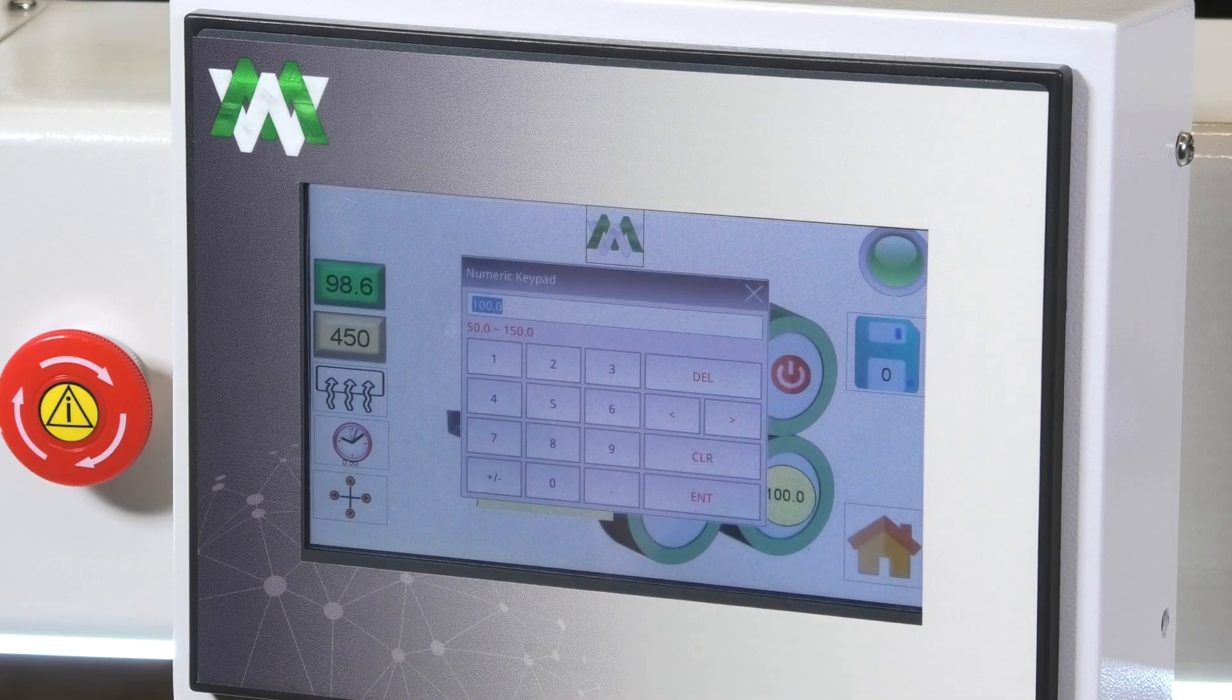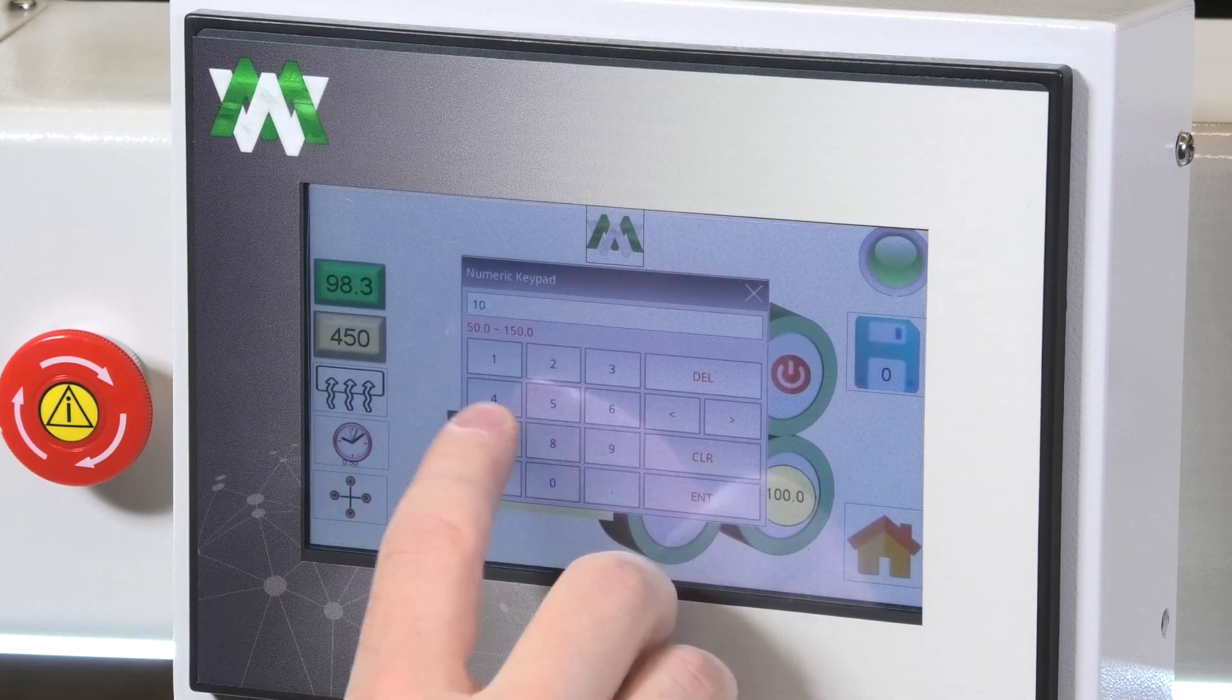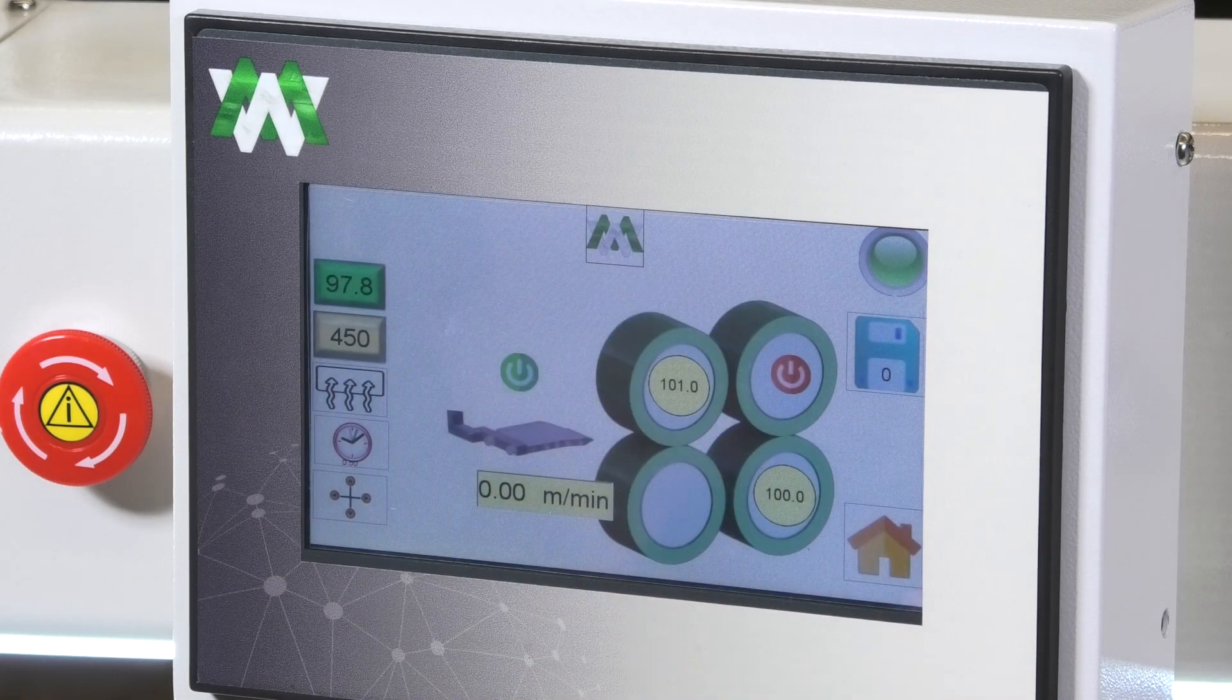Once again you press on the button, input your parameter, and click enter. So now the wheels go faster than the master speed.